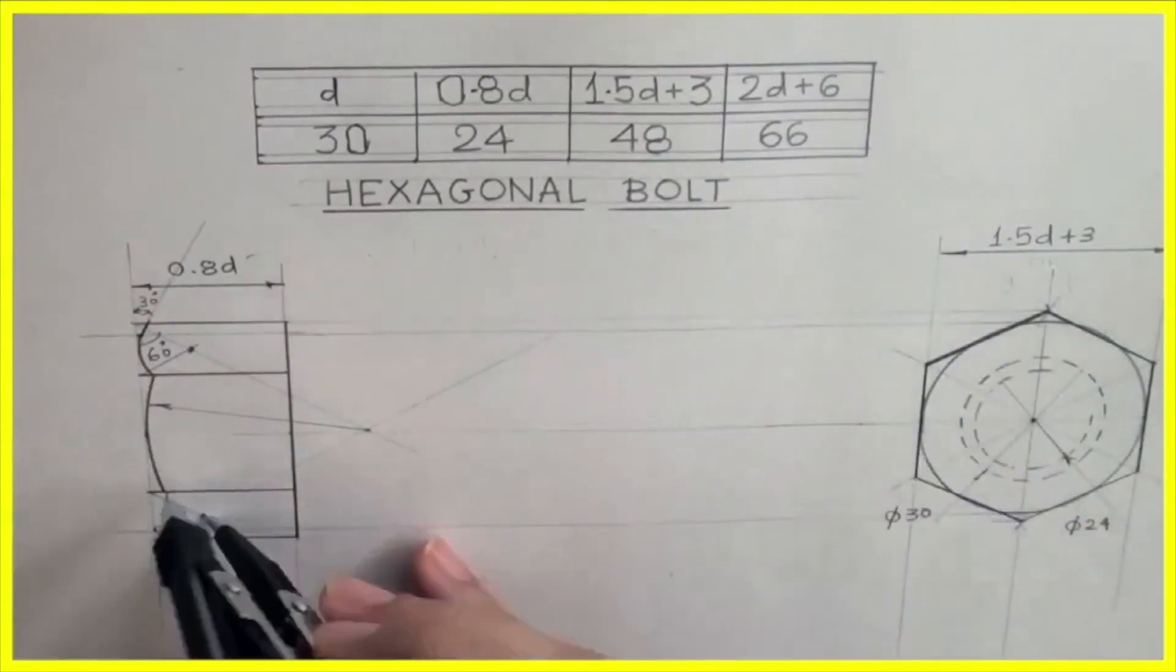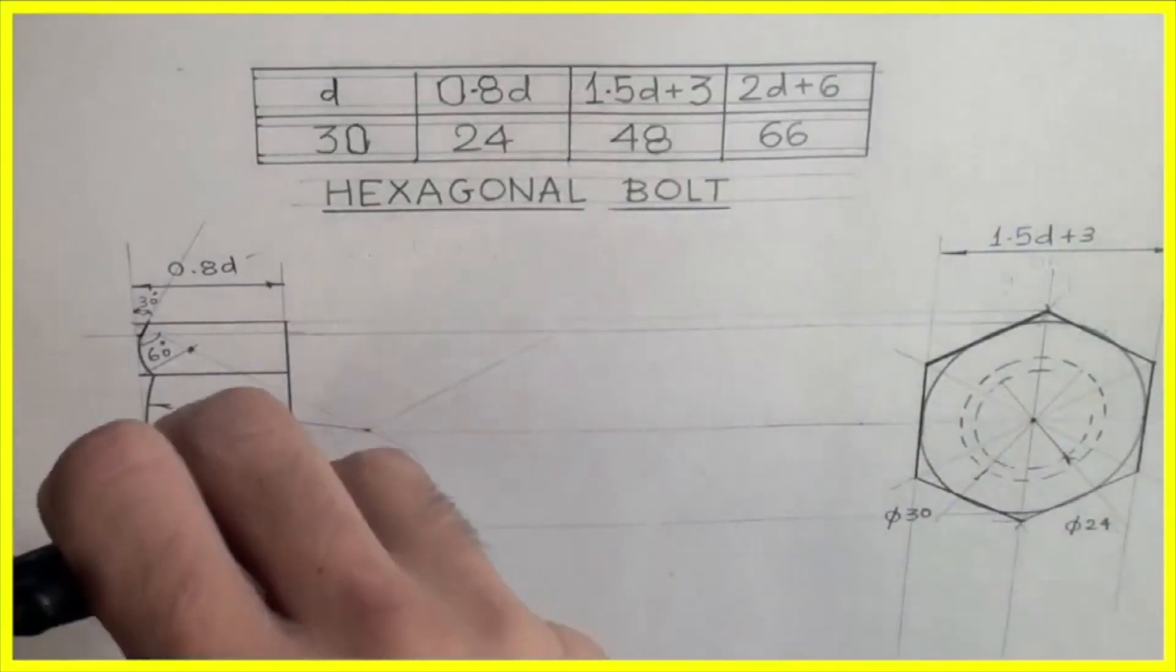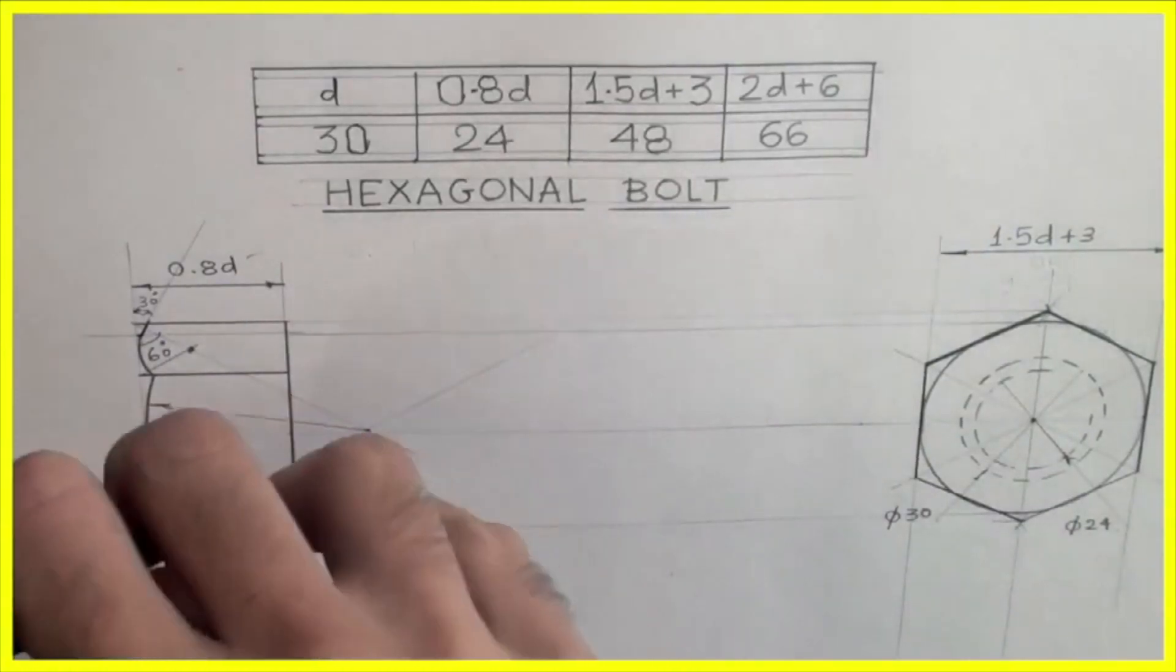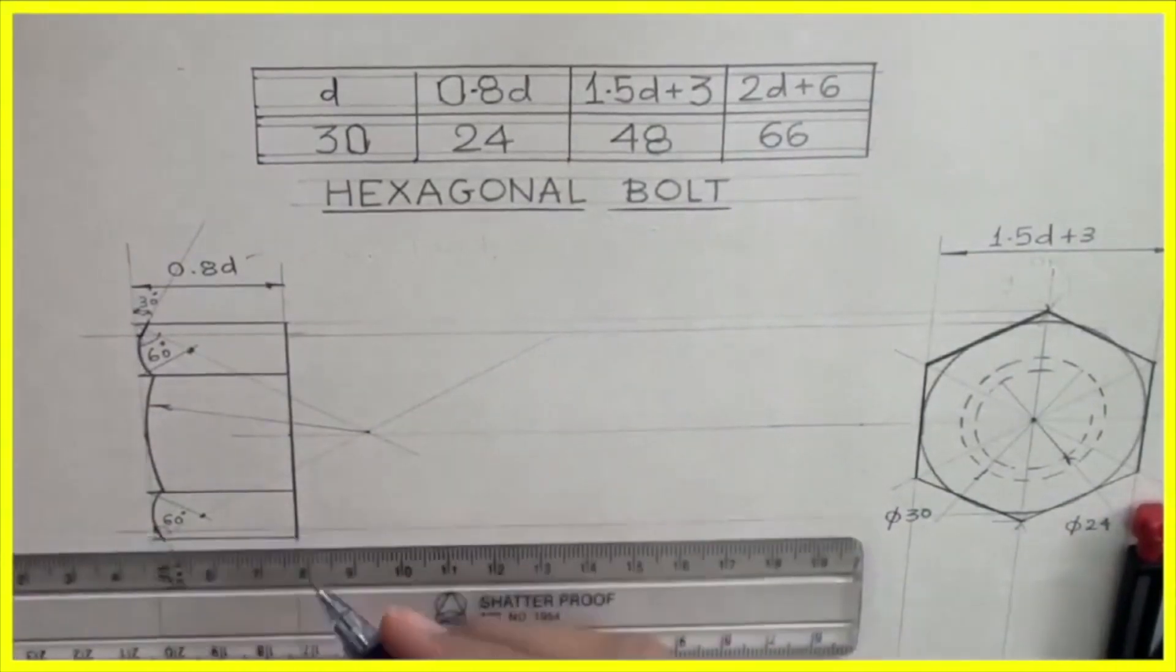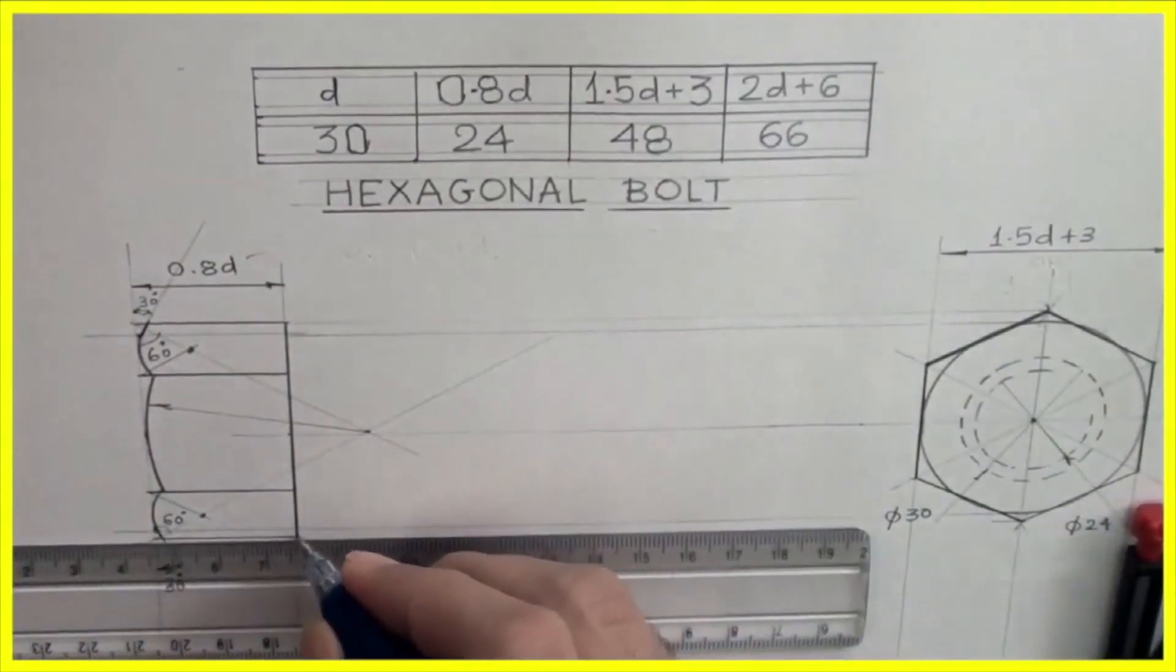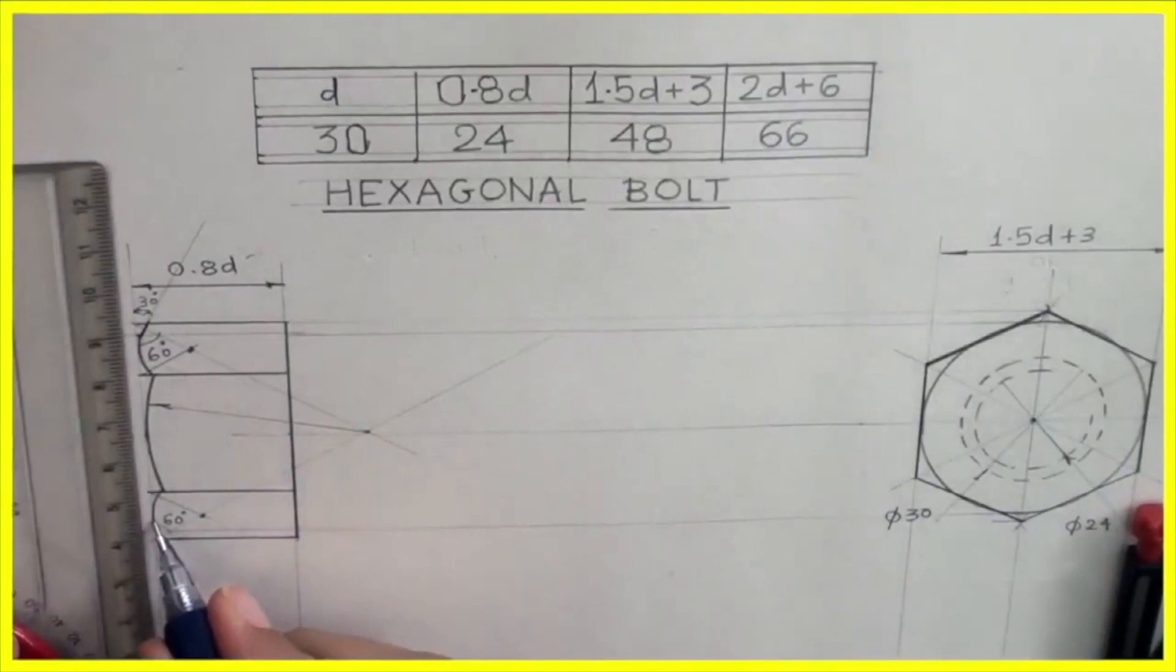Same way, from here we need to draw arc. Wherever it is touching, from that point we need to draw 30 degree line. This will be dark and this line will be dark.